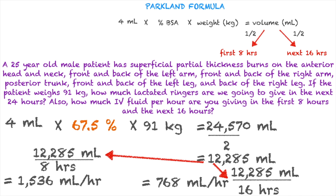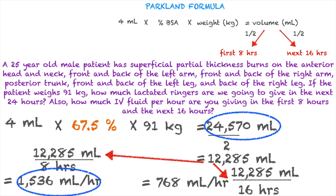In 24 hours, we will give a total of 24,570 mL of IV fluids. The first half will be given in the first 8 hours at a rate of 1,536 mL per hour, and in the next 16 hours it will be given at a rate of 768 mL per hour. Hopefully that made sense. If not, don't worry — let's do another practice problem.